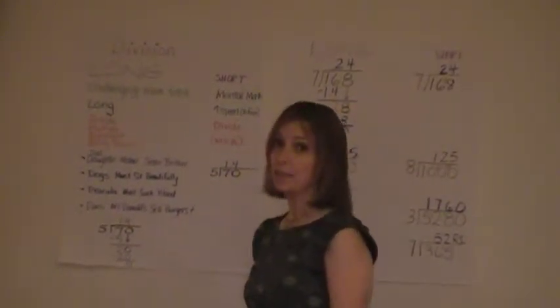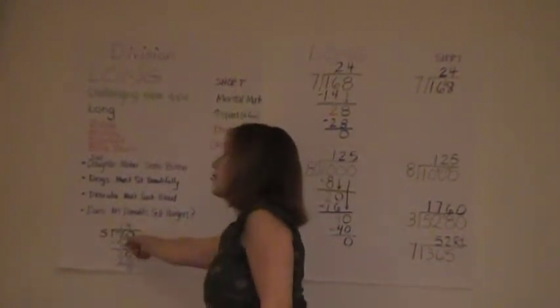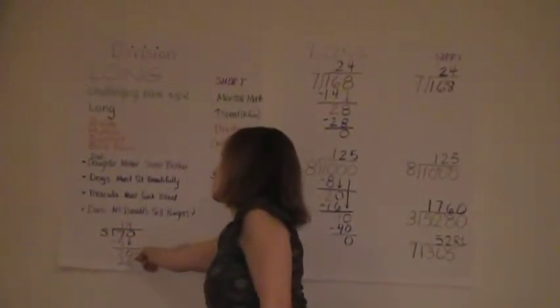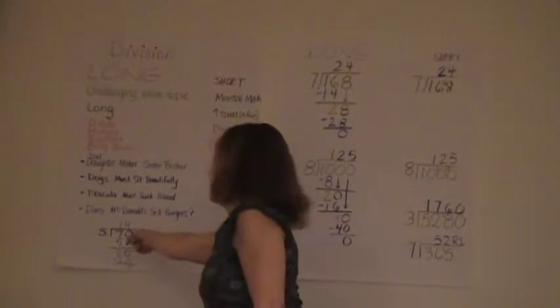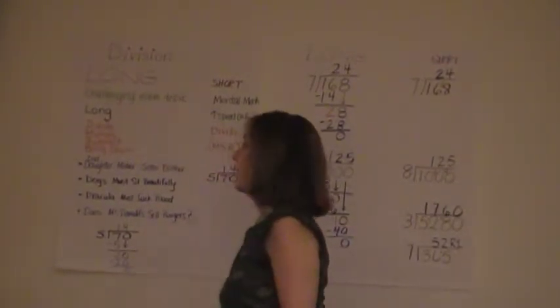Then you have a second division problem to do within this long division problem. And so your next problem is 5 into 20 and that becomes 4 and you do 5 times 4 is 20 and you subtract and you get a 0. In short division, which is much shorter,